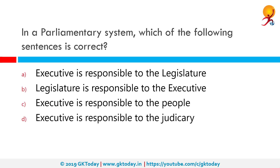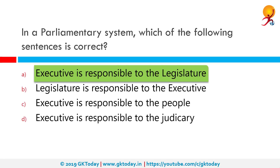In a parliamentary system, which of the following sentences is correct? The correct answer is that the executive is responsible to the legislature. The Constitution of India states that the executive branch of the state, that is the council of ministers, shall be collectively responsible to the legislature or house of the people. This implies that parliament should oversee the work of the government and hold it responsible for its actions and omissions.